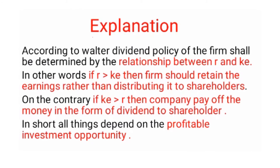According to Walter, the dividend policy of the firm shall be determined by the relationship between R and KE. R is the internal rate of return and KE is the cost of capital. Walter model works around these two things and their relationship. In other words, if R — that is, internal rate of return — is more than the cost of capital, then the firm should retain the earnings rather than distributing them to the shareholders. If internal rate is greater than cost of capital, the firm will return its earnings.